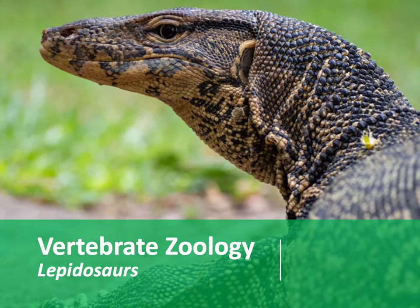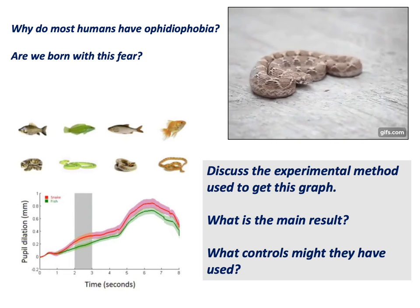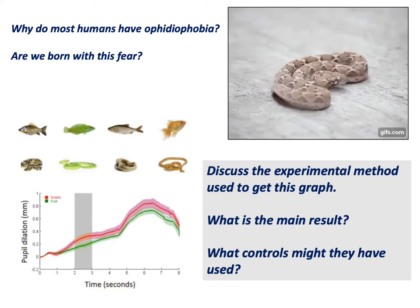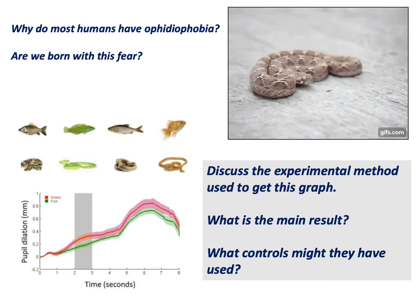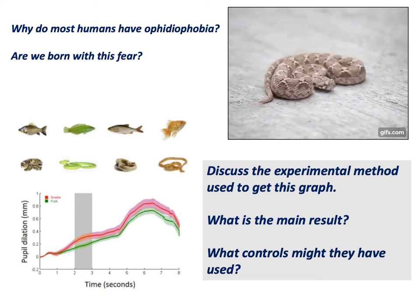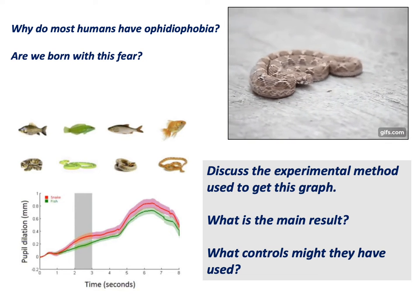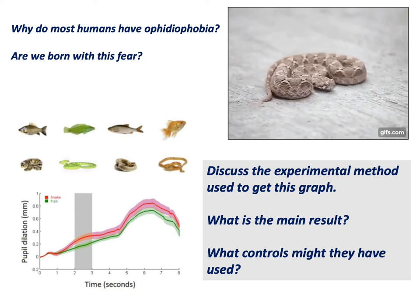But before we get into that, let's talk about how humans and reptiles interact with each other. Let's use the example that people think of: snakes. A snake in Greek is known as ophili, and ophidiophobia is something that humans have — it's a shared cultural trait around the world.